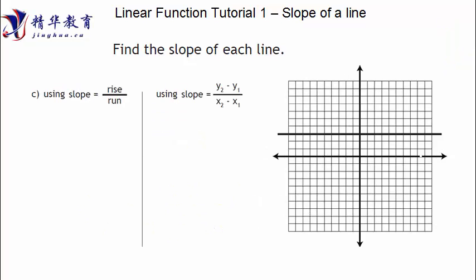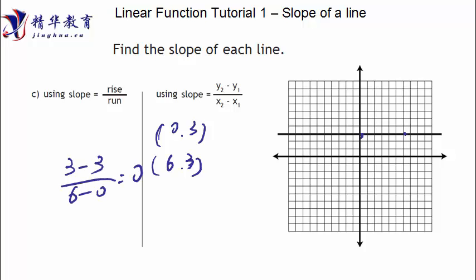Now we have a horizontal line. What does horizontal mean? The run can be a lot — x can change a lot — but y never changes. We can put a point here: (0, 3). And this point over here is (6, 3). So rise over run is 3 minus 3 over 6 minus 0, which equals 0. That means the slope equals zero. Remember this: horizontal line slopes are always equal to zero. If you see a horizontal line, don't even try to find a slope — it's automatically zero because the rise is always zero.